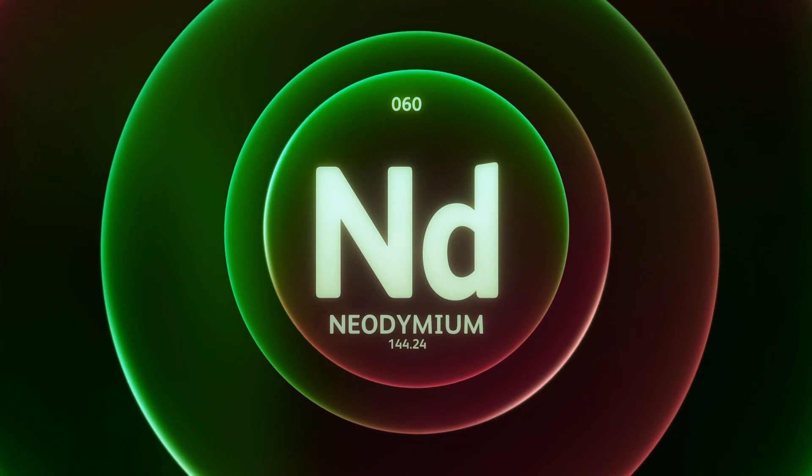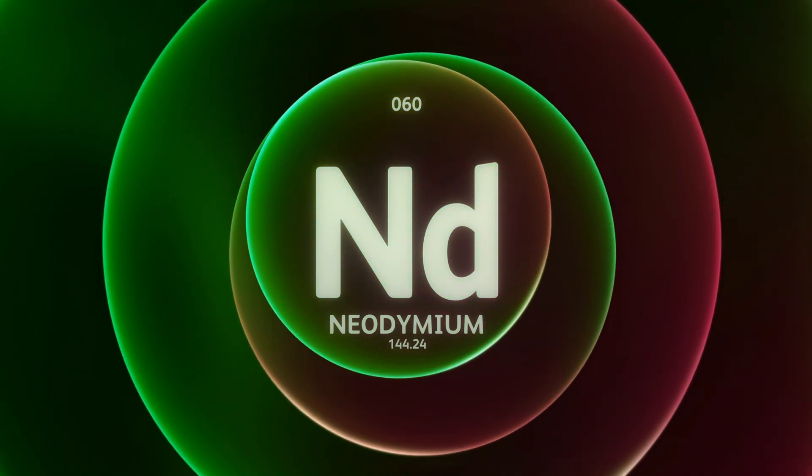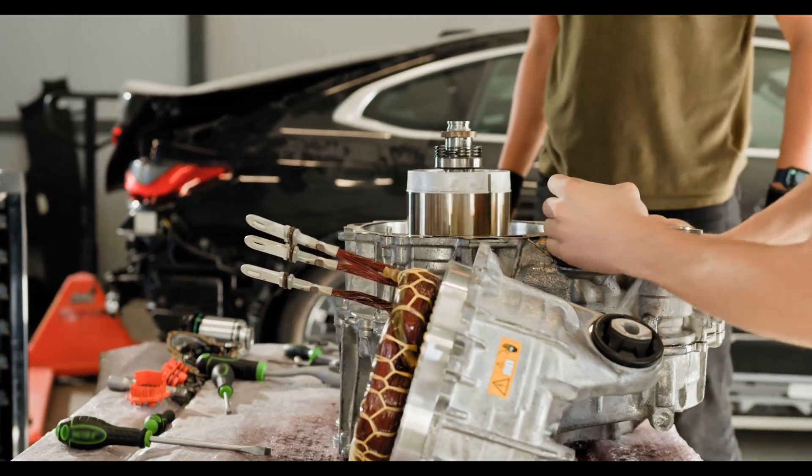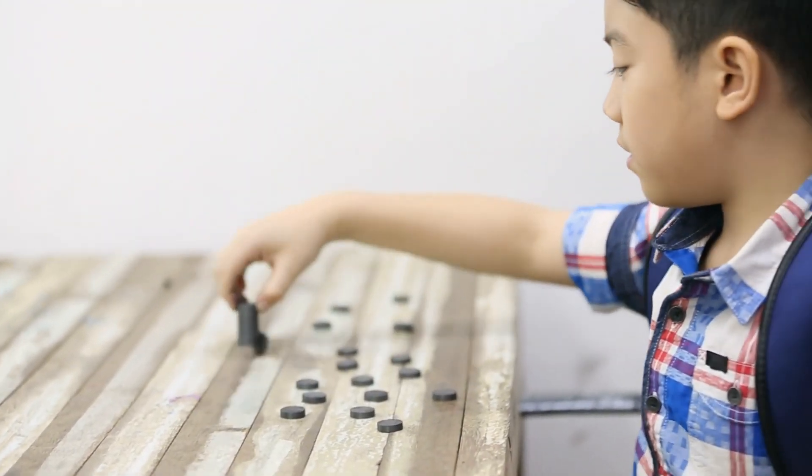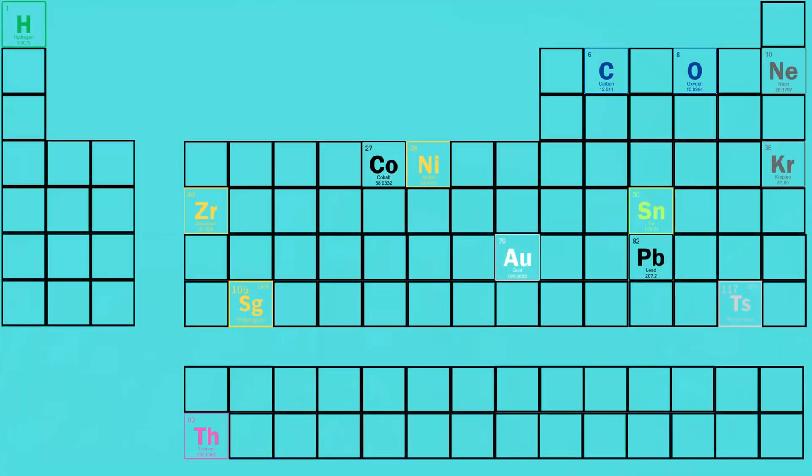Neodymium, symbolized as Nd and carrying the atomic number 60, is not just another element. It's a game changer, powering everything from electric motors to advanced magnets. Today we will talk about the element that almost everyone uses but don't know they do. Let's dive into the fascinating world of neodymium.